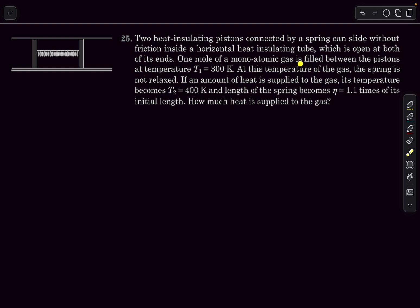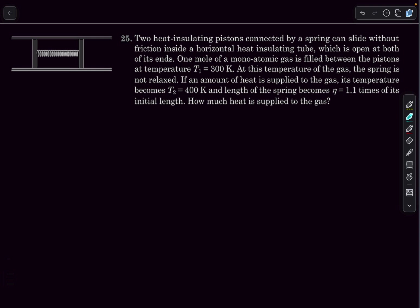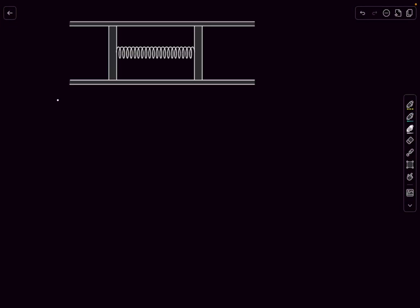We have one mole of monoatomic gas filled between the pistons at an initial temperature T1. At this temperature the spring is not relaxed. If an amount of heat is supplied to the gas, its temperature becomes T2 and the length of the spring becomes eta times its initial length. How much heat is supplied to the gas? Give this problem a try, then check out the solution.